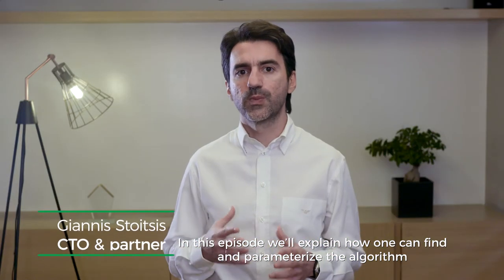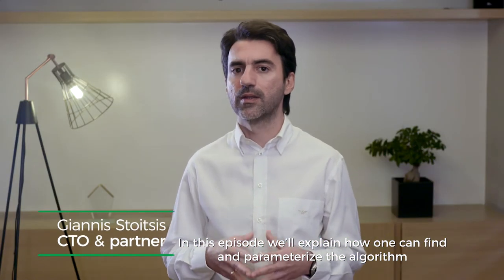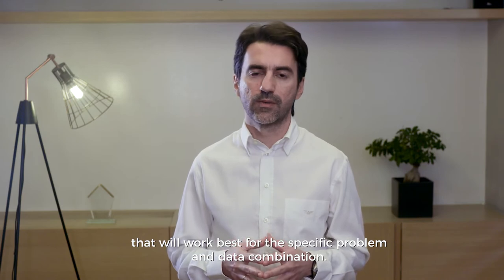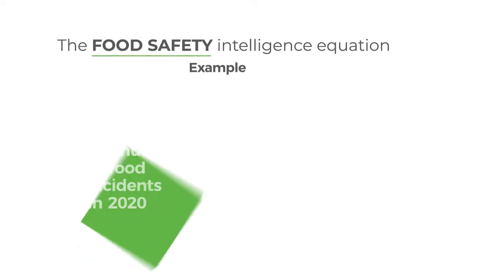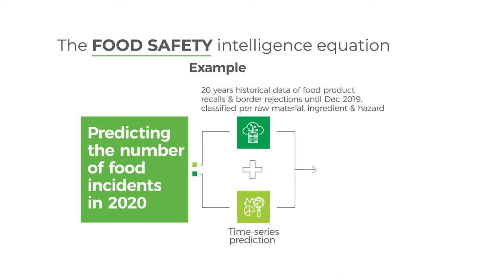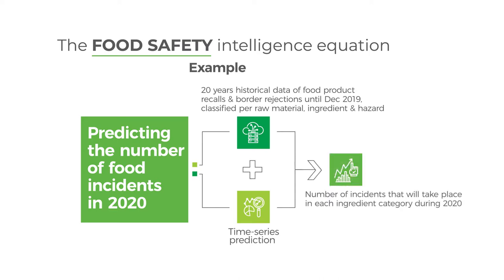In this episode, we will explain how one can find and parameterize the algorithm that will work best for the specific problem and data combination. Given that I have access to historical data about all food product recalls and border rejections that have taken place until December 2019, classified according to the raw materials, ingredients, and hazards that were linked to the recall — is it possible to predict with high confidence how many food safety incidents we are going to have for each ingredient category in 2020?